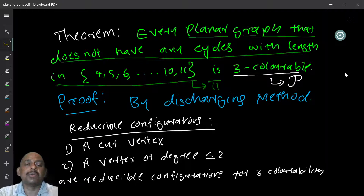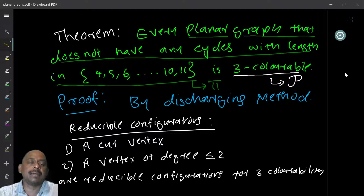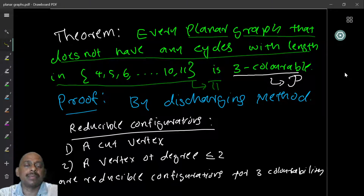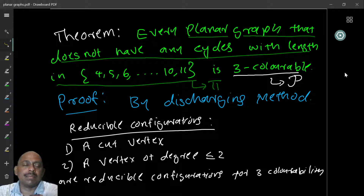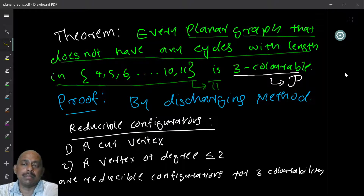We start with a set of reducible configurations. For three-colorability of graphs, I claim that a cut vertex and a vertex of degree less than or equal to two are reducible configurations. This means a minimum counterexample to three-colorability cannot contain cut vertices, and cannot contain vertices of degree less than or equal to two. Try to prove this yourself before continuing.